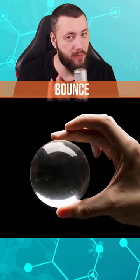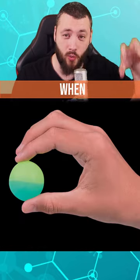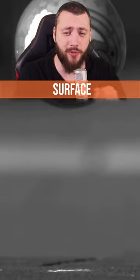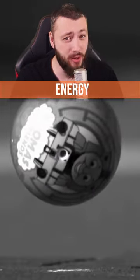A glass ball will bounce higher than a rubber ball when dropped on a surface. Why is that? Quite simple. When the rubber ball drops on the surface, it deforms and loses quite some energy due to that.